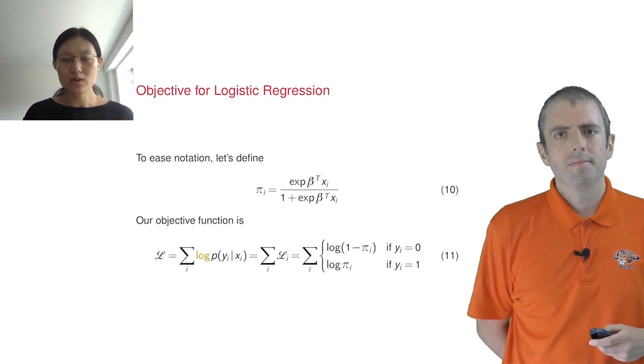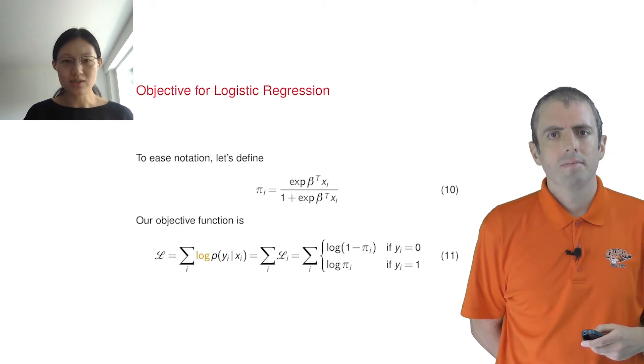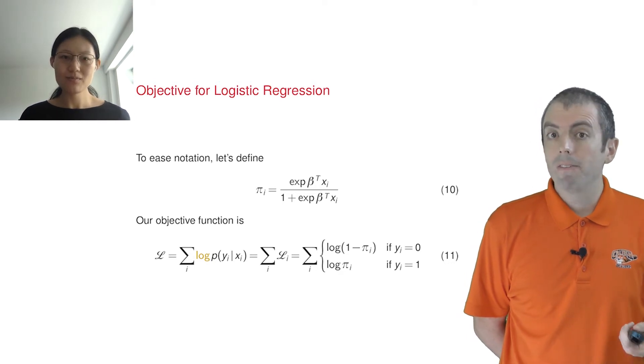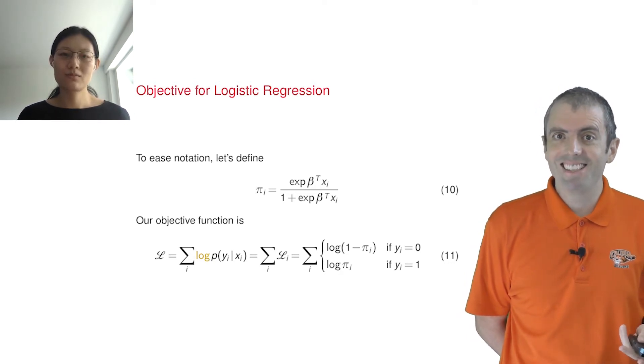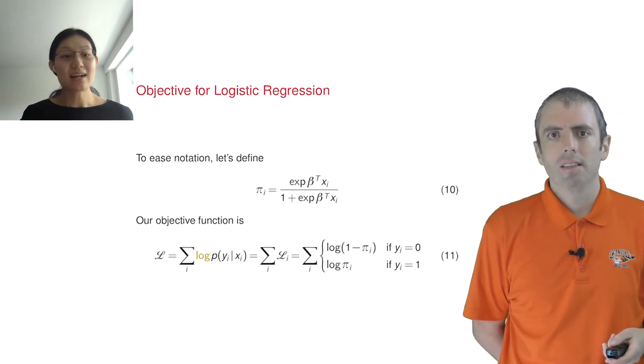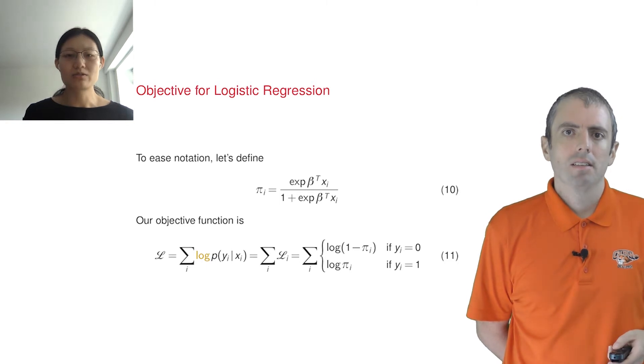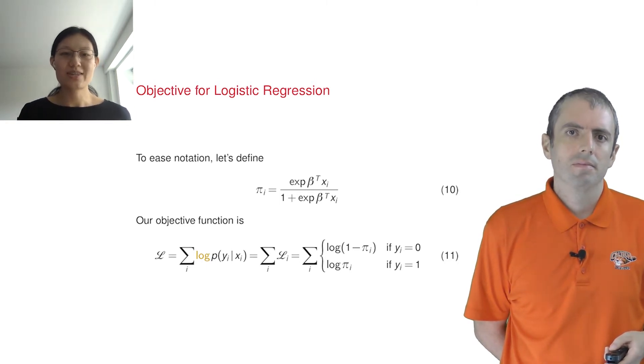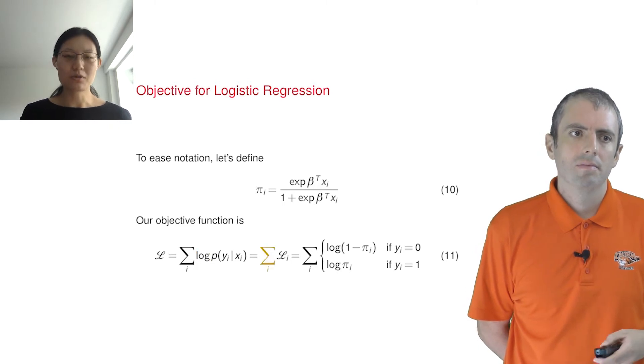The straightforward way of computing the overall probability of example 1, 2, and so on is to multiply them all together. But for any reasonably large data set, this will be a tiny number, basically zero. Exactly. So instead, we'll take the log of the overall probability, but taking the log of the product is the same as the sum of the individual log probabilities.